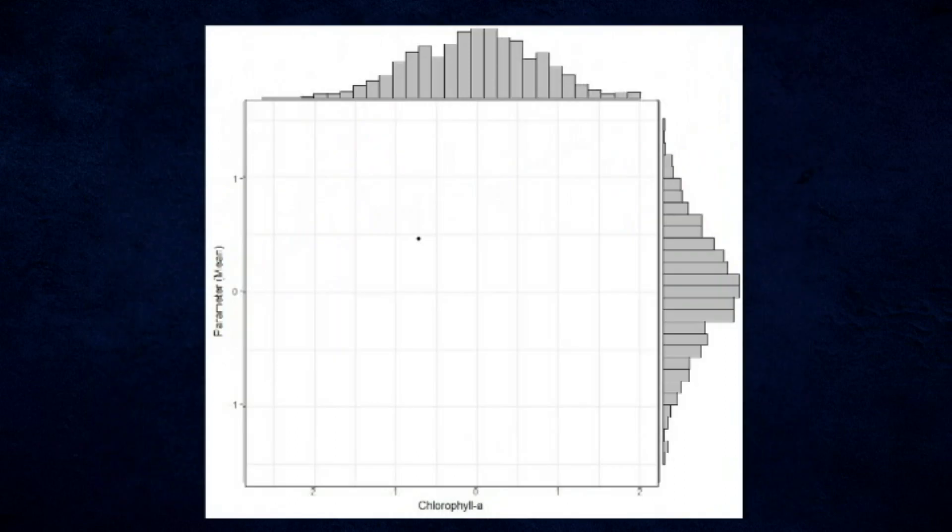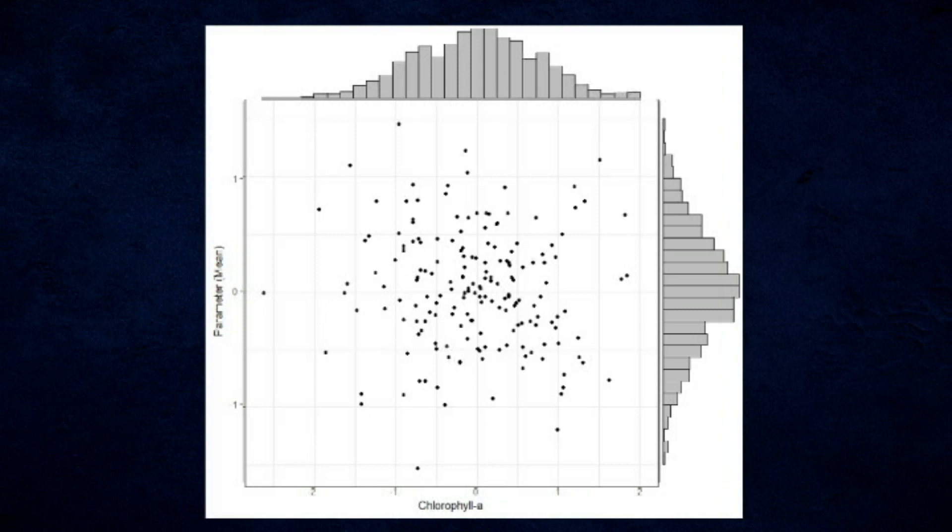Like the alien robot, MCMC takes a random walk through the data. As it does so, it makes guesses at the parameter value of the distribution's mean in this example.